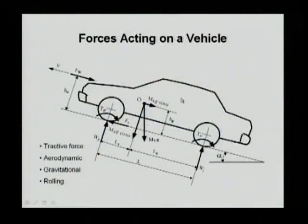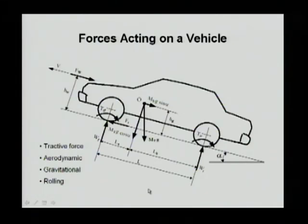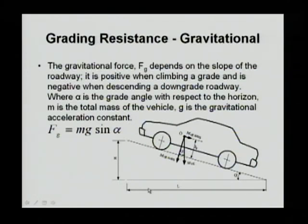If we look at the model of a vehicle, there are four different forces applied on it. This quarter vehicle model shows the weight of the vehicle equivalent on one of four wheels. There is a traction force that moves the vehicle, an aerodynamic force that acts as resistance, a gravitational resistance, and a rolling resistance. Let's take a look at the details of each resistance.